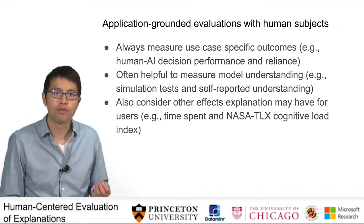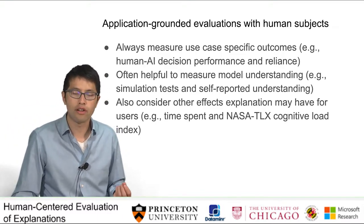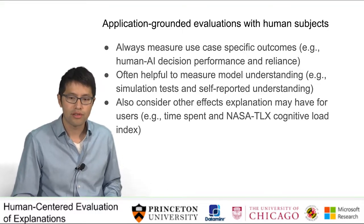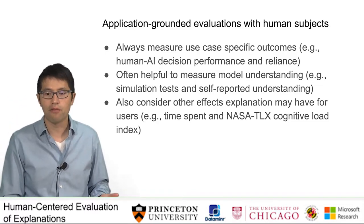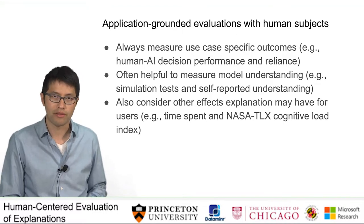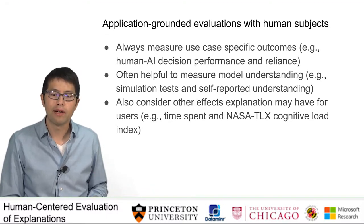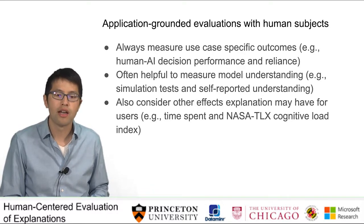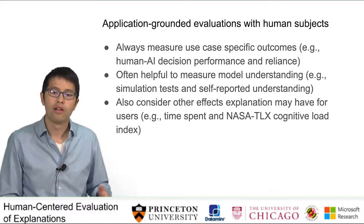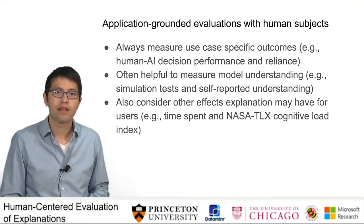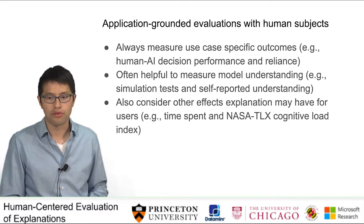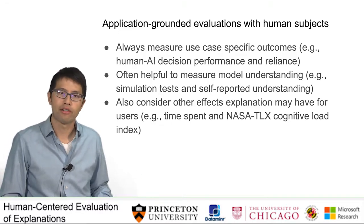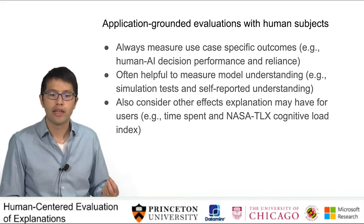The most important tips for researchers who plan to run application-grounded evaluations with human subjects are: first, always measure use case-specific outcomes such as human-AI decision-making performance or human reliance on machine predictions. Second, it is often helpful to measure model understanding — example measurements can ask users to simulate machine predictions on unseen instances or report their subjective understanding. Last but not least, it is useful to consider other effects explanations may have for users, such as the time spent on a task and the cognitive load involved in making sense of explanations.